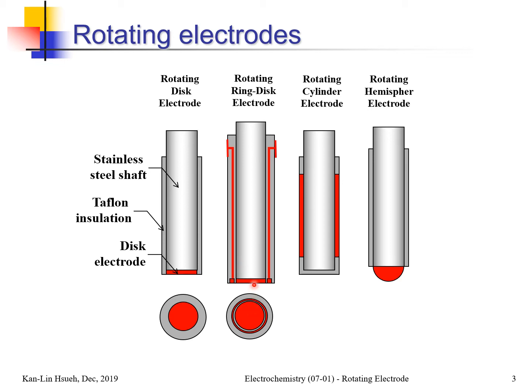In the rotating ring-disk electrode, the middle part is the same as the disk electrode, but at the periphery there is a ring around it. The ring is used to detect intermediate products or byproducts, so from that you can distinguish the reaction mechanism, reaction pathways, or calculate individual reaction rate constants. It is a great tool but requires a lot of care.